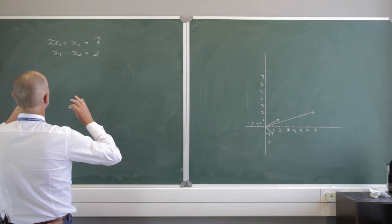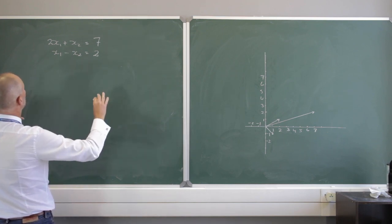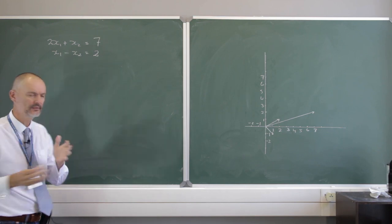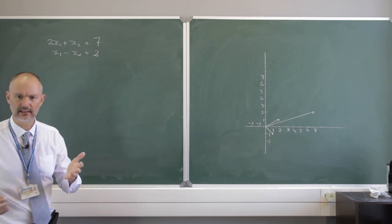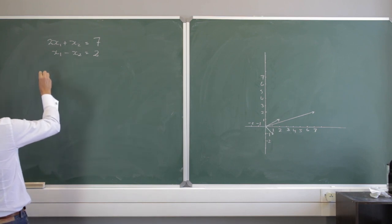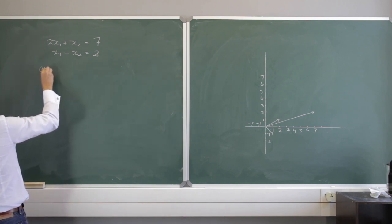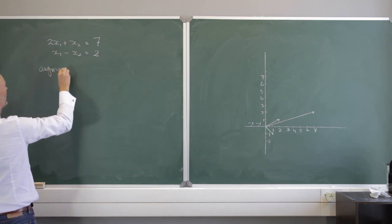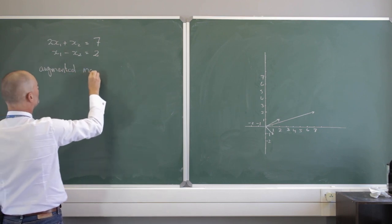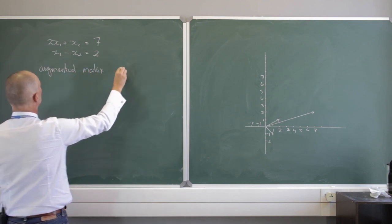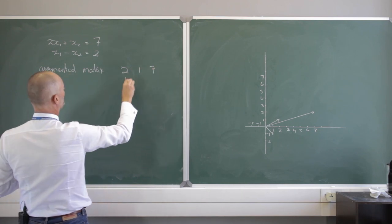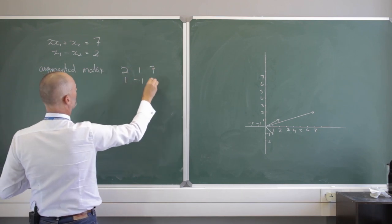Here I have two equations and two unknowns. Instead of x and y I've made them x sub 1 and x sub 2, just to avoid confusion. My augmented matrix would be 2, 1, 7 and 1, negative 1, 2.